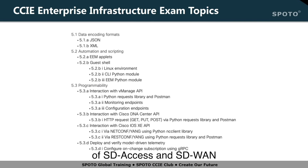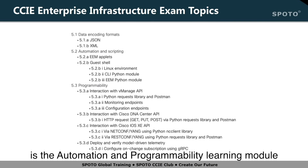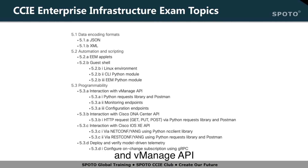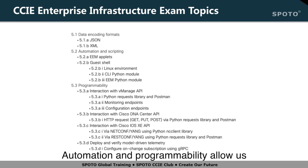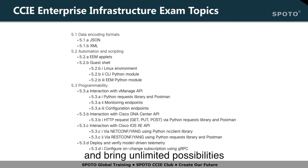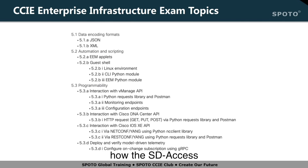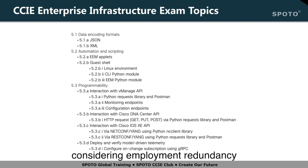After the SD-Access and SD-WAN modules comes the automation and programmability learning module. We will spend about 8 hours in the Python course teaching how to call DNAC and vManage APIs through Python to achieve automation and programmability. Automation and programmability allows us to customize workflows, reduce repetitive work, and bring unlimited possibilities to the network. In the near future, enterprises would no longer need as many network engineers, so it is better to be one step ahead and understand how SD-Access, SD-WAN, automation, and programmability work prior to companies considering employment redundancy.